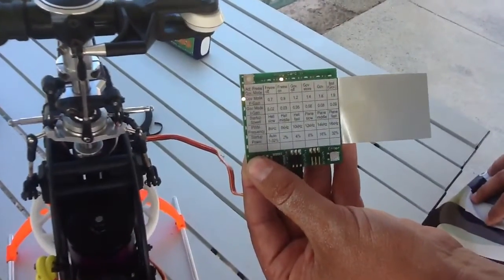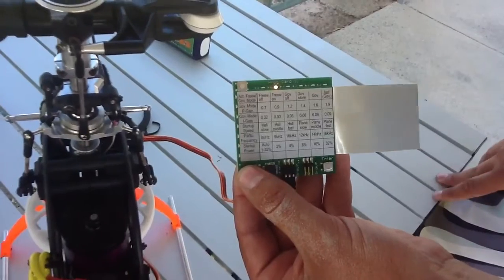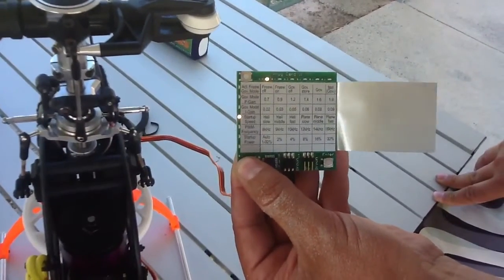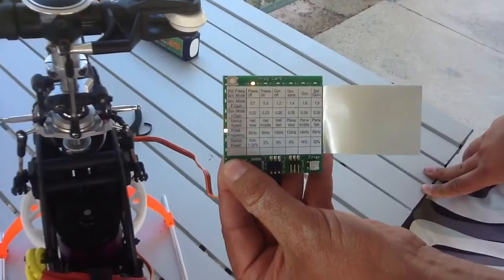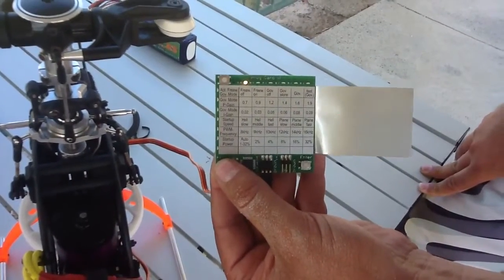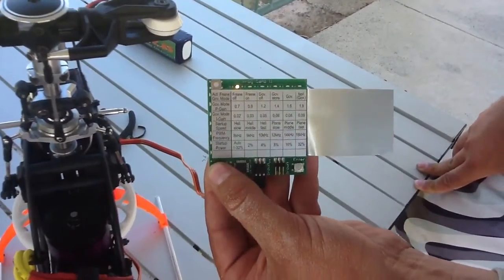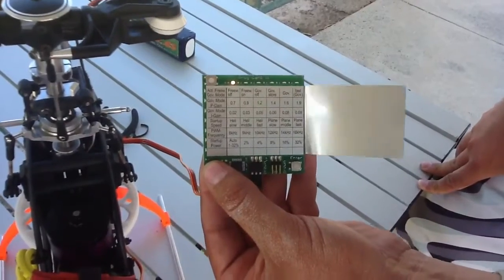And so, moving down, you've got your governor mode P-gain, I-gain, and your start-up speeds. I've set mine to heli slow, your PWM frequency. Mine's at 8 kilohertz, and my start-up power, I've set mine to auto, which is 1 to 32%.